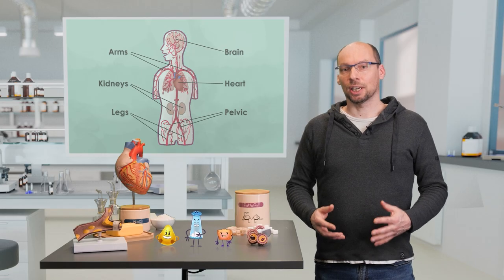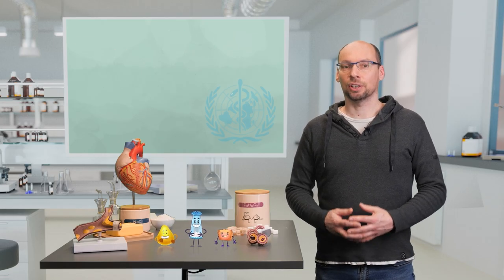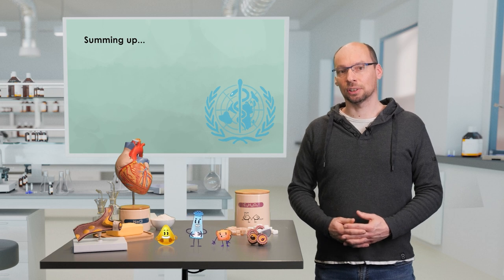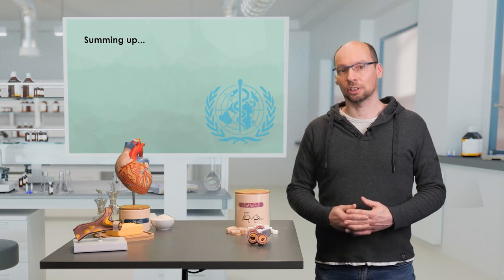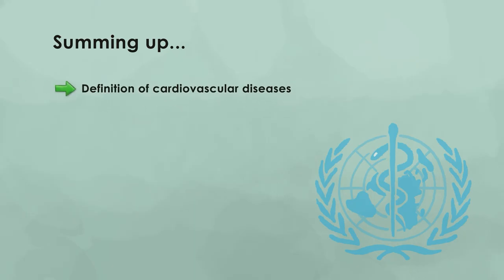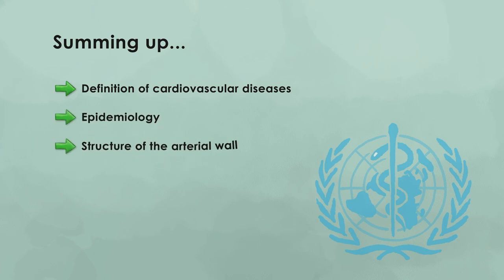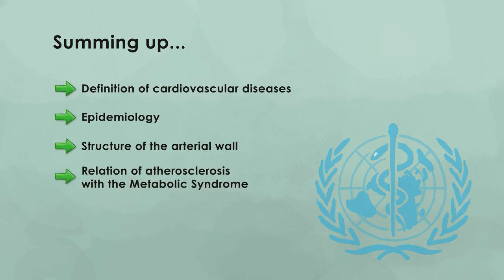We reached the end of this video, where we started with general aspects of cardiovascular diseases, such as the definition given by the World Health Organization, a bit of epidemiology, and the structure of the arterial wall. Then we discussed how cardiovascular diseases and especially atherosclerosis are related with the metabolic syndrome. And last but not least, we went through the different stages of atherosclerosis.